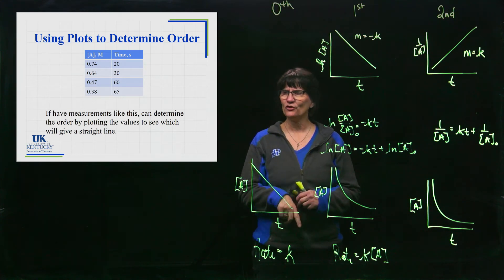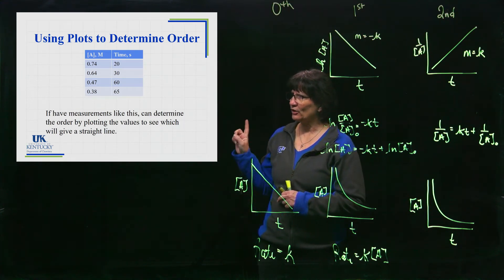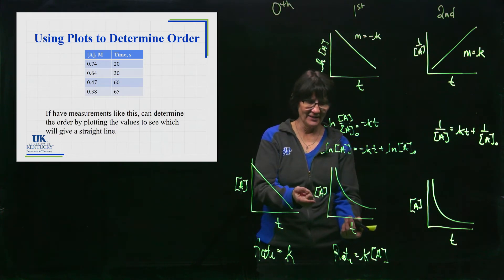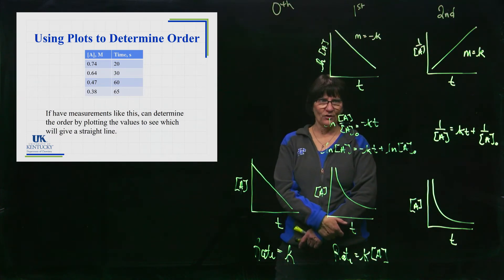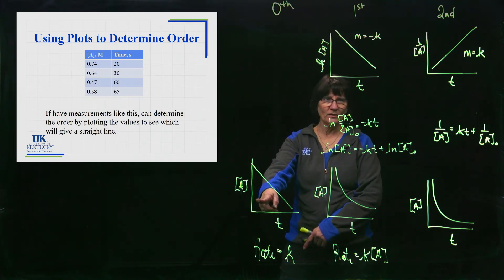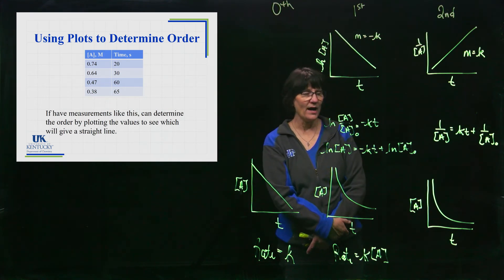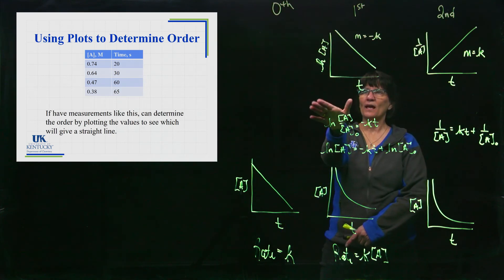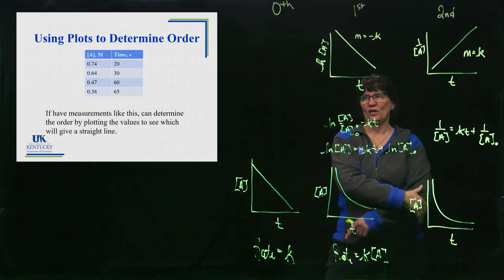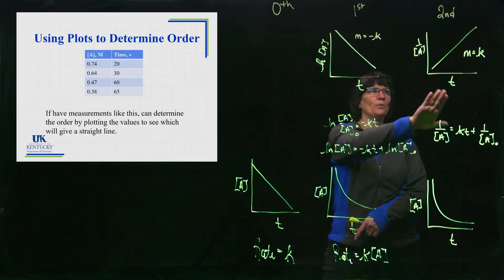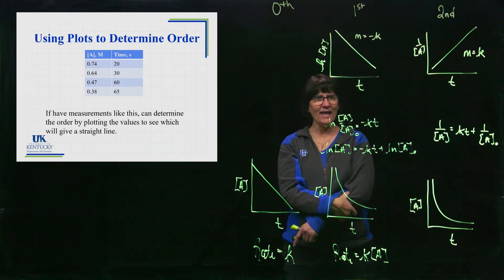So with a couple keystrokes in Excel, I'll convert all of those concentrations into natural log of concentration, and then I'll tell it to plot. Is that a straight line? If this one wasn't, we know it's not zeroth order. If this one's not, then we know it's not first order. And then we could try the last one, which is to say okay, let's plot 1 over concentration. So we'll turn all of those concentrations into 1 over concentrations and do a plot of those and say is that a straight line?